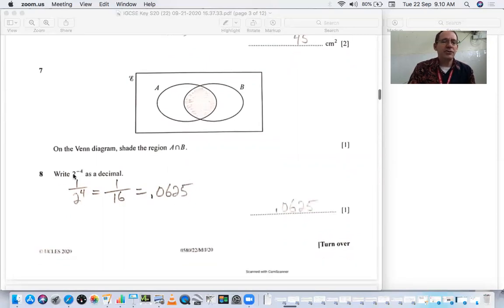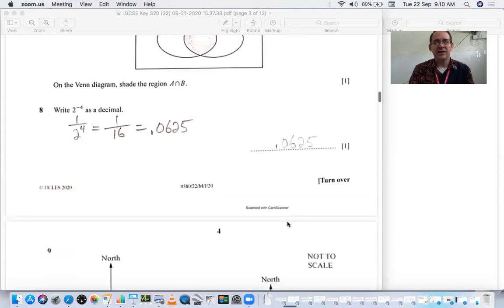Number 8, write 2 to the negative 4 as a decimal, not as a fraction. 2 to the negative 4 is the same thing as 1 over 2 to the fourth, which is 1 over 16th. And as a decimal, it's 0.0625. You can just write this into your calculator at the beginning and get 0.0625. Make sure you put it in decimal form.